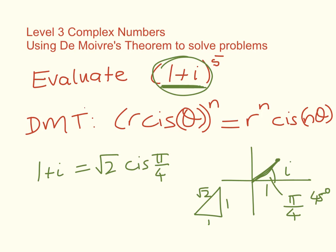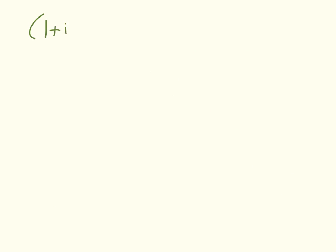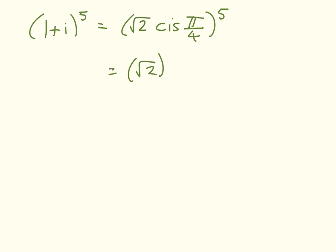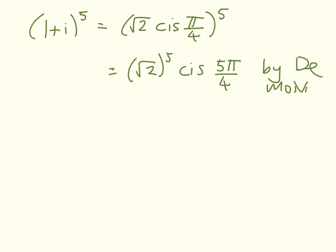So what we're working out is root 2 cis pi on 4, to the power of 5. We've got 1 plus i to the power of 5 equals root 2 cis pi on 4 to the power of 5, which equals root 2 to the power of 5 times cis 5 pi on 4. And that's by De Moivre's Theorem. When we use a theorem like that, we really should say that that's what we're doing.